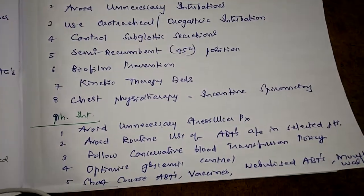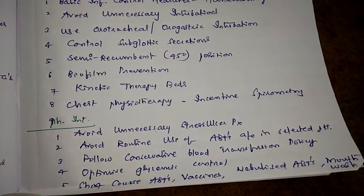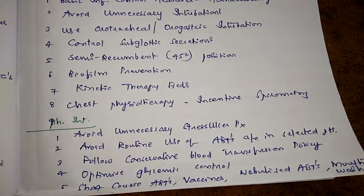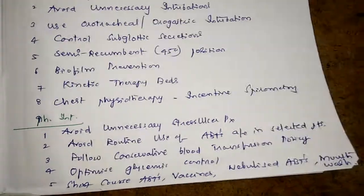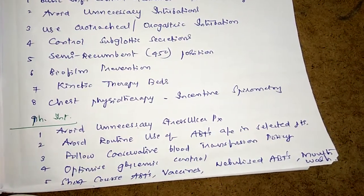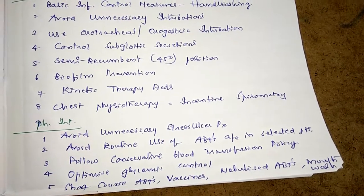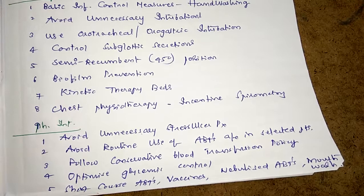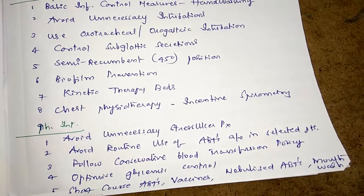Pharmacological interventions include avoiding unnecessary stress ulcer prophylaxis like H2 receptor antagonists and proton pump inhibitors. Avoid routine use of antibiotics except in selected patients like coma and neurosurgery patients. Follow a conservative blood transfusion policy and optimize glycemic control.